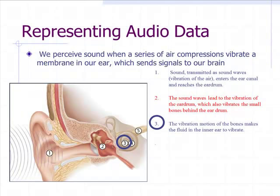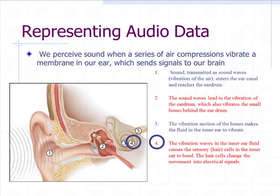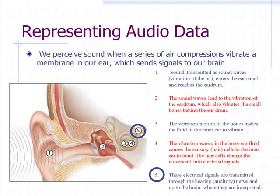Third, the vibration motion of the bone makes the fluid and inner ear to vibrate. Vibrating waves and inner ear fluid causes the sensory hairs, cells, and inner ear to bend. The hair cells change the movement into electrical signals. These electrical signals are transmitted through the ear's auditory nerves up to the brain, where it's interpreted as sound.